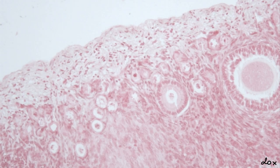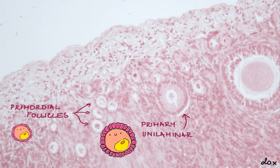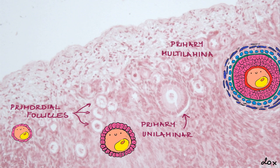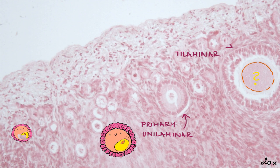Let's revise the stages of development. We can see primordial follicles, primary unilaminar follicles, and primary multilaminar follicles. We cannot see a nucleus in each oocyte because the section was performed either under or above the nucleus.